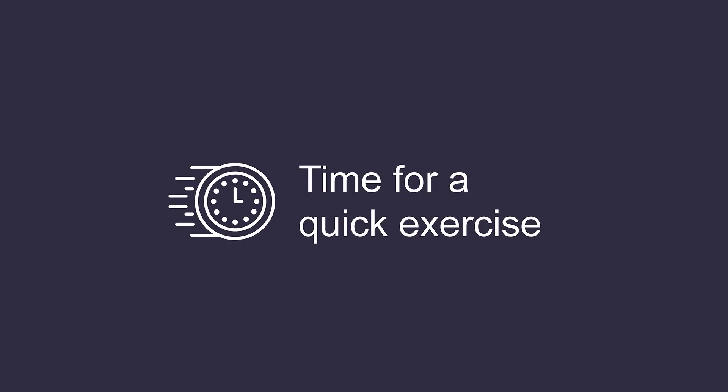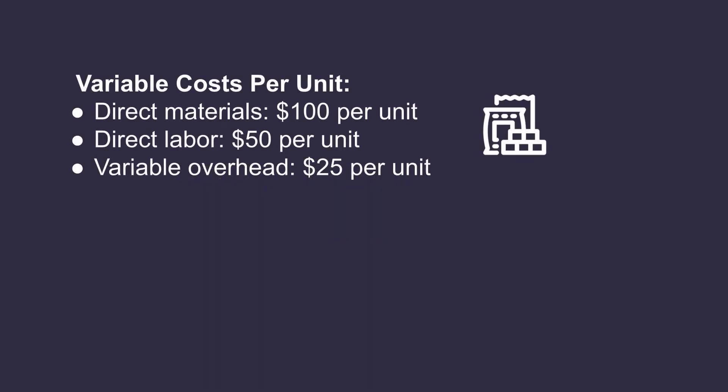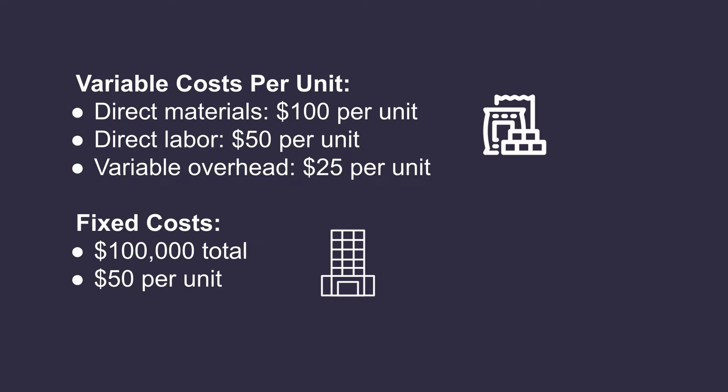Let's look at a brief example of how costs would get allocated to one unit of inventory under each of these methods. Let's assume the manufacturing costs for each unit produced by ABC Manufacturing Company in a period were as follows: direct materials were $100 per unit, direct labor was $50 per unit, and variable overhead was $25 per unit. In this case, we have a $50,000 total fixed cost. To calculate the per unit fixed cost, we would take the total fixed cost and divide it by the number of units produced. Let's say 2,000 units were produced, so we would take the $50,000 divided by the 2,000 units, giving us $50 per unit.